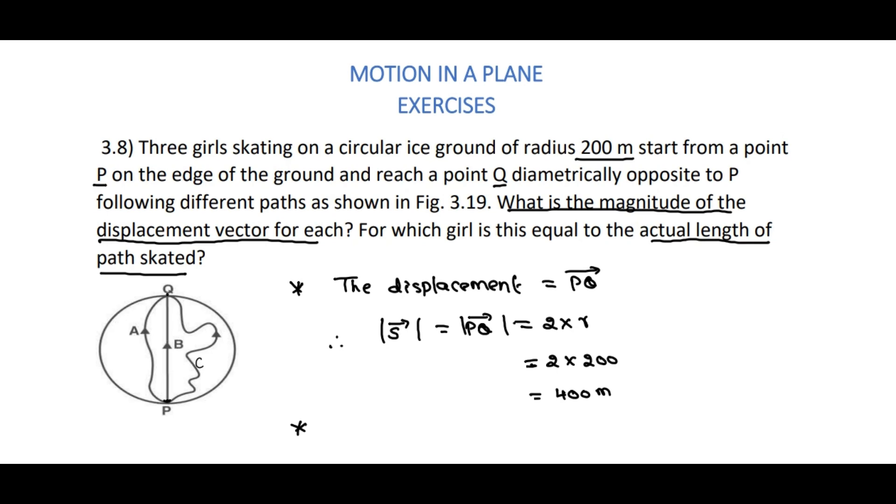But girl B is traveling in a straight line from P to Q. In this case, the displacement and distance in the case of girl B is the same. So the answer is girl B.